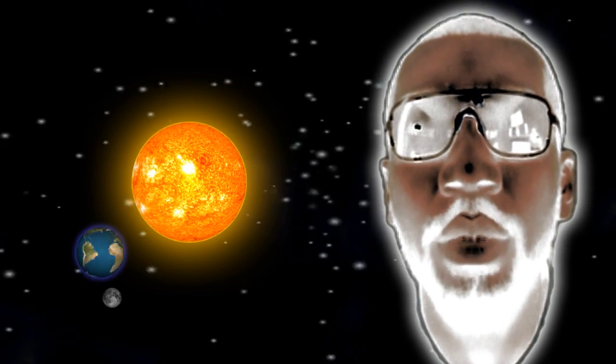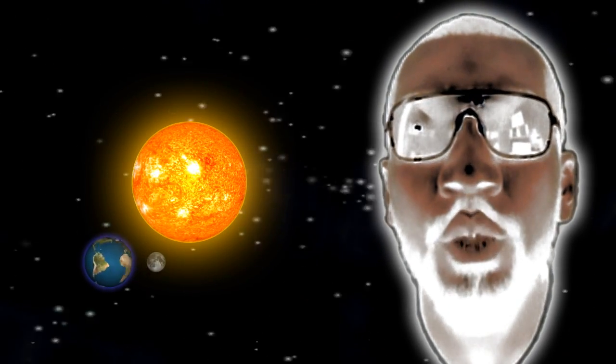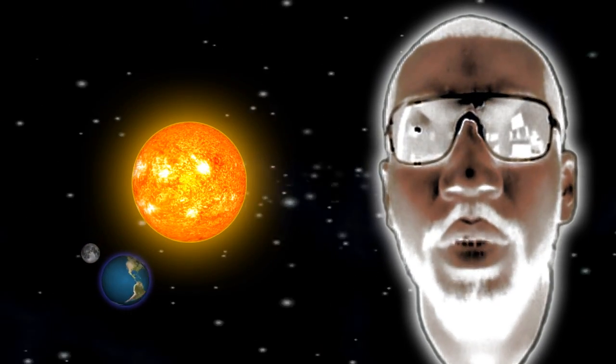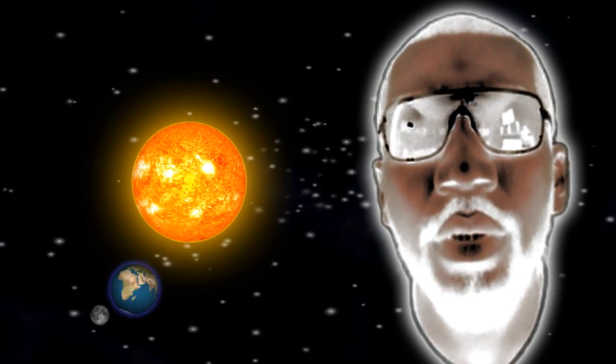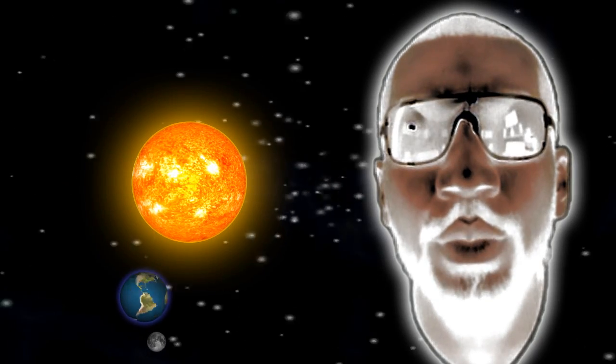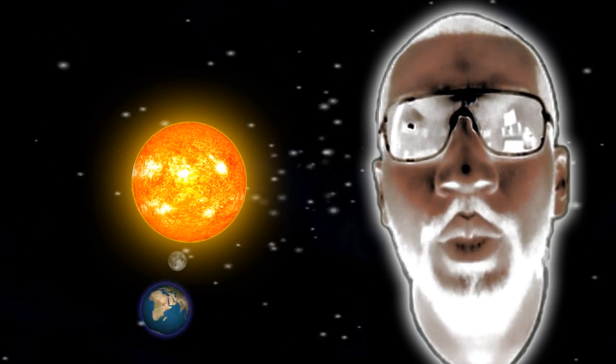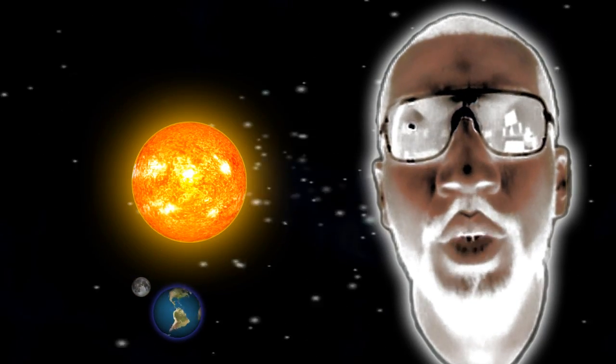If we lived on a planet that had two moons, we may have twice as many months within our calendar. If we lived on a planet that had two moons, there would be some nights where one moon would be a crescent and the other moon would be full.